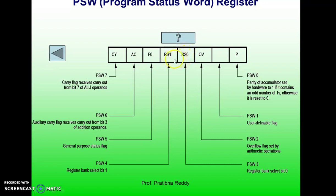The fourth and third bits of PSW are the register bank select bits (RS1 and RS0), which we have already discussed in the memory organization of RAM. If these are 00, bank 0 is selected; 01 selects bank 1; 10 selects bank 2; and 11 selects bank 3. PSW5 is reserved for future use.